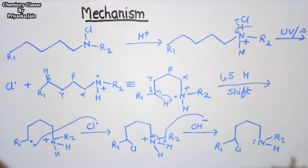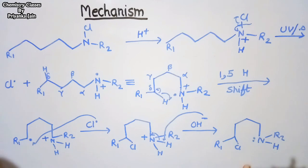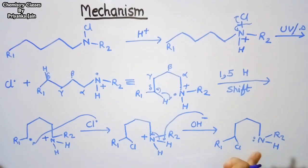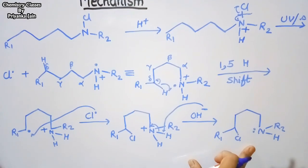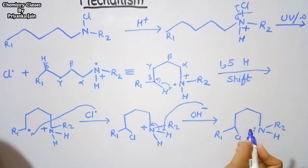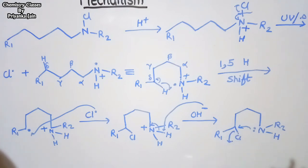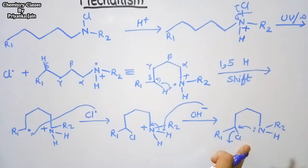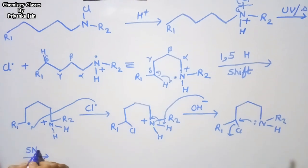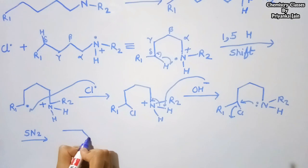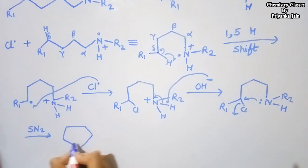The next step is an SN2 mechanism. This compound undergoes a second-order bimolecular nucleophilic substitution reaction. The nitrogen lone pair attacks the delta carbon, and the chlorine leaves as a leaving group — we get chloride ion. A new bond is formed between the carbon atom and the nitrogen atom as a result of the SN2 reaction mechanism.